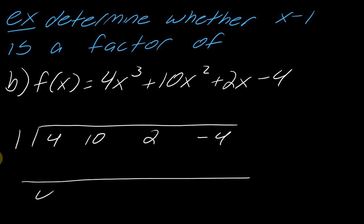Draw my line. Bring down the 4. 4 times 1 is 4. 10 plus 4 is 14. 14 times 1 is 14. 14 plus 2 is 16. 16 times 1 is 16. Negative 4 plus 16 is 12. This is not a 0.